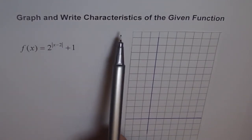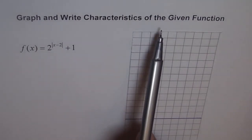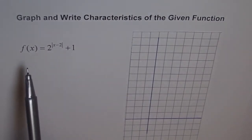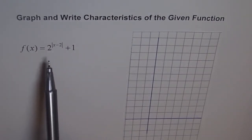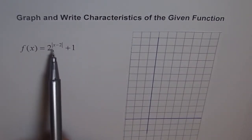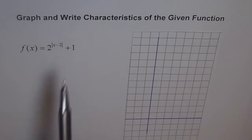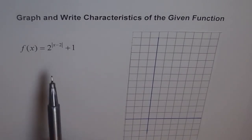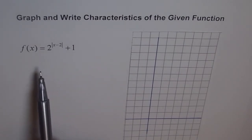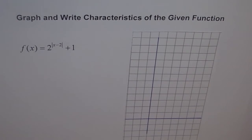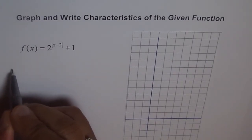Graph and write characteristics of the given function: f(x) = 2 to the power of absolute value of (x minus 2), plus 1. We have an exponential equation with an absolute value exponent. One way to graph it is to make a table of values and then sketch the graph.